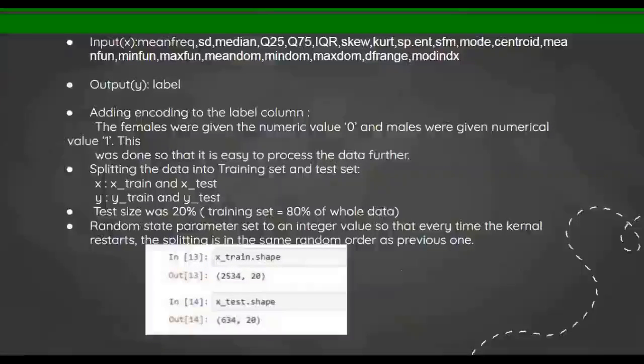I am finding the input and output: the inputs are the first 20 attributes and the output is the label. Then I'm encoding the labels: the females were given the numeric value 0 and the males were given numerical value 1, so that it's easy to process the data. Then I'm splitting the data into training set and test set.